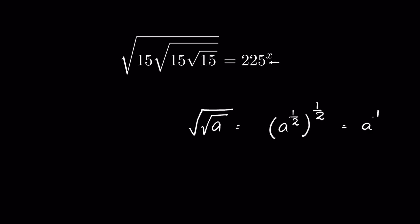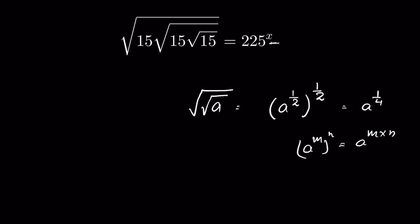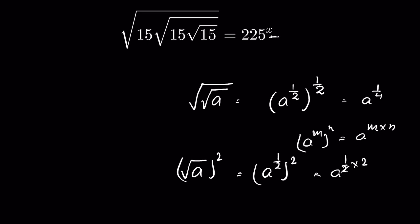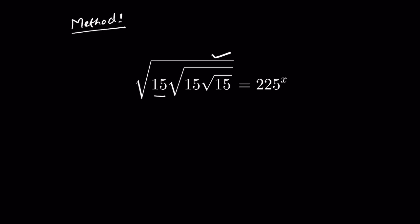It becomes a raised to the power of 1 upon 4, because when a raised to the power m, whole to the power n, it is equal to a to the power m times n. We can solve this question using this concept, or we can also use the concept where to remove the square root we square it — a raised to the power 1 upon 2, when squared, is equal to a raised to the power 1 upon 2 times 2, so the 2s cancel. Squaring both sides removes the square roots one by one, and then we can find the value of x.